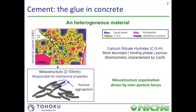CSH is the binding phase that glues together all other phases. CSH is a porous material and its stoichiometry is characterized by the calcium to silicon ratio. If we do a zoom on the yellow phase in the cartoon and go down to the mesoscale, that is to say between 2 and 100 nanometers, we will observe a mesostructure. This structure is important since it is responsible for the mechanical properties of the material. This mesostructure results from the aggregation of smaller particles, and organization among those particles is fully driven by inter-particle forces.